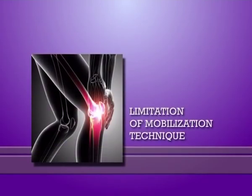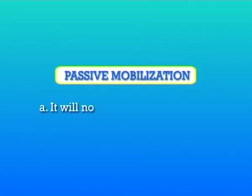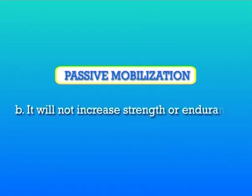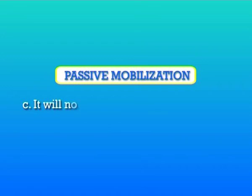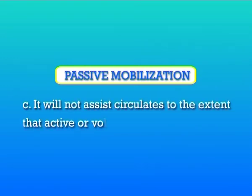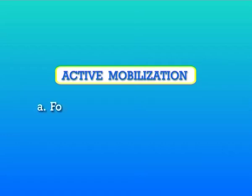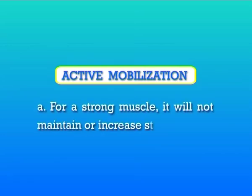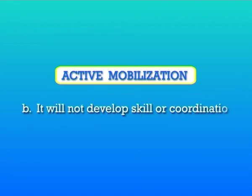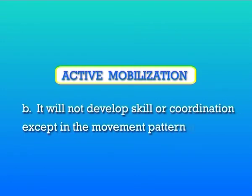The next topic is limitations of mobilization techniques. Passive mobilization will not prevent muscle atrophy, will not increase strength or endurance, and will not assist circulation to the extent that active or voluntary muscle contraction does. For active mobilization, for a strong muscle it will not maintain or increase strength, and it will not develop skills or coordination except in the movement pattern used.